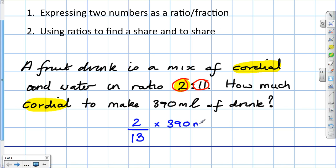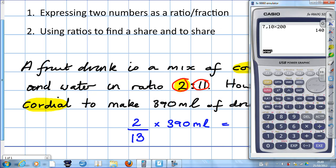Let's get the calculator to do that. So we type in 2 over 13 times 390. Press execute and there's the answer, 60 milliliters.